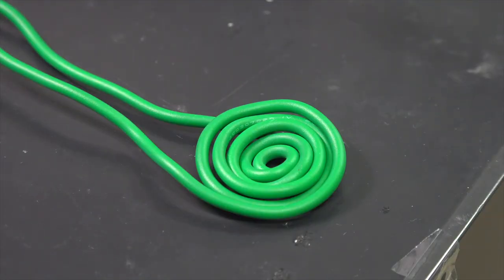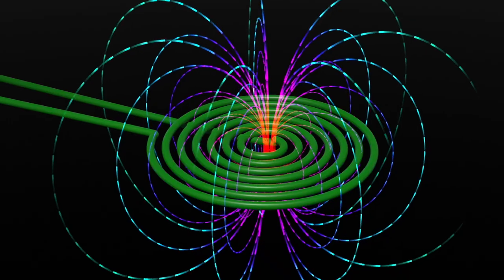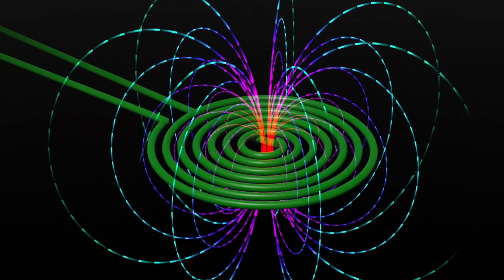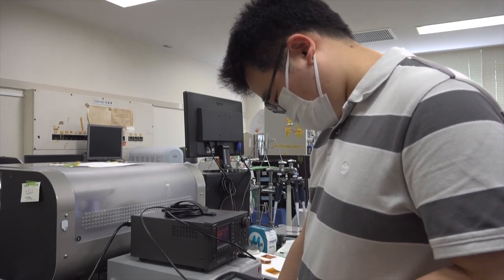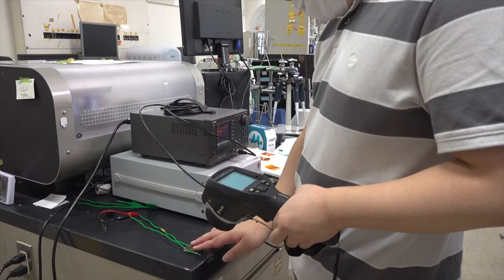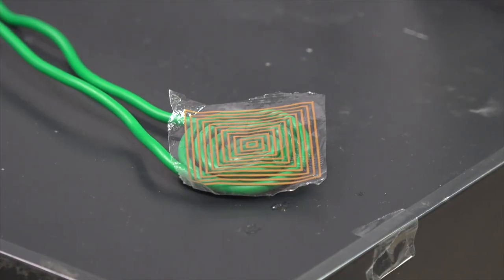First, an electric current is passed through a spiral metal coil, creating a magnetic field. When the printed circuit is placed above the coil, heat is generated through electromagnetic induction.